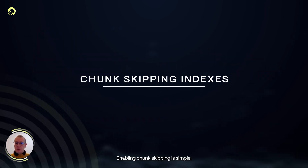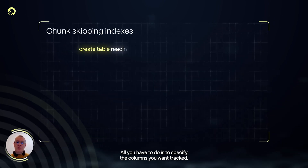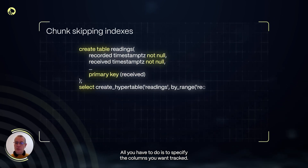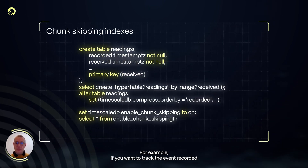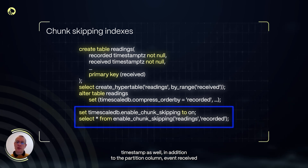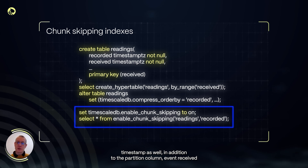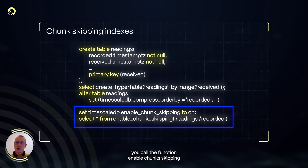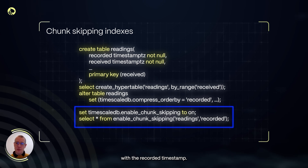Enabling chunk skipping is simple. All you have to do is specify the columns you want tracked. For example, if you want to track the event_recorded timestamp in addition to the partitioned column event_received, you call the function enable_chunk_skipping with the recorded timestamp.